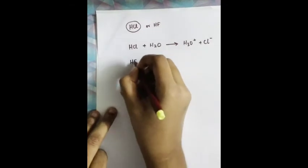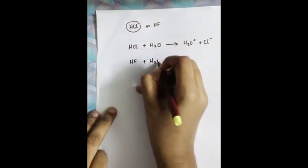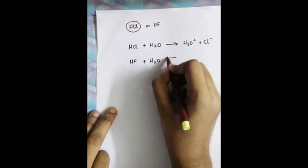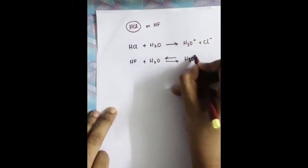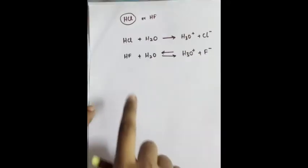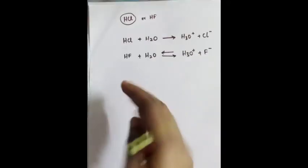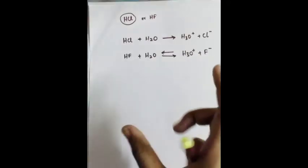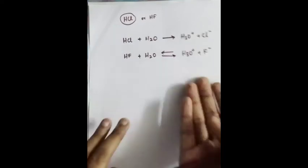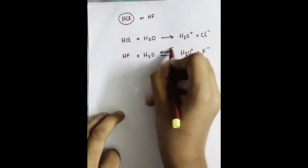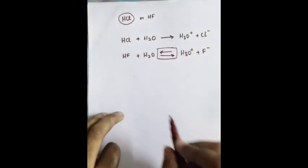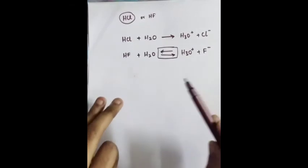But if you mix HF — hydrofluoric acid — the only difference is there exists an equilibrium. When 10 molecules of hydrofluoric acid dissociate, they can still recombine. So this equilibrium exists — that is the key difference.